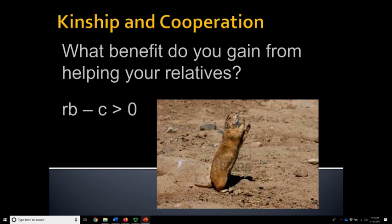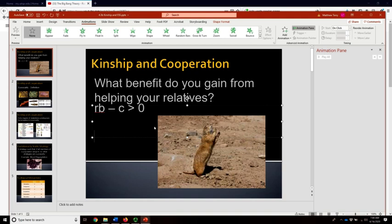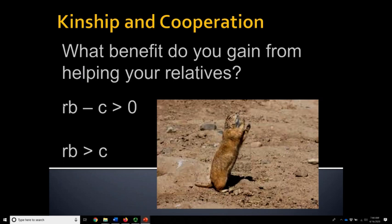Here is the equation. R is the degree of relatedness. B is the benefit received by your close relatives — so we multiply the degree of relatedness by that benefit. C is the cost to the individual exhibiting the altruistic behavior. So the classical form is: if RB minus C is greater than zero, or more simply, if R times B is greater than C, then altruism will be selected for. This is the equation to figure out when altruism is going to be an adaptive advantage — when natural selection will keep altruistic behaviors in the population.